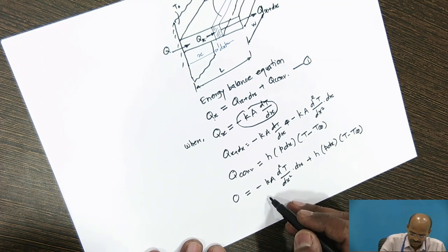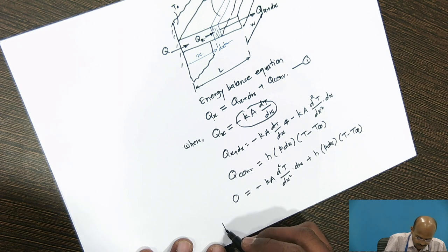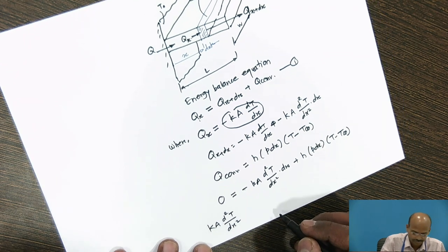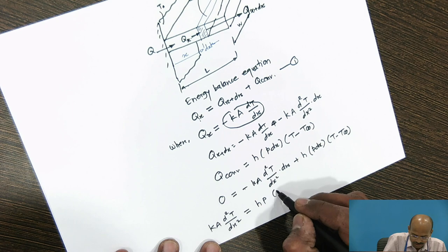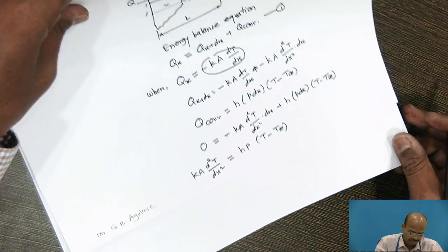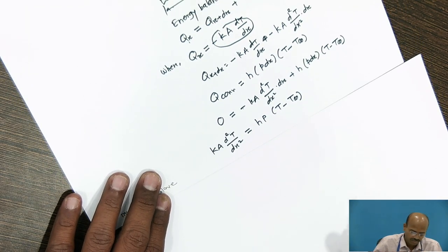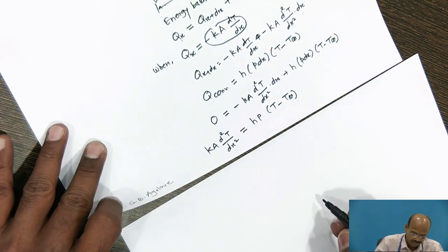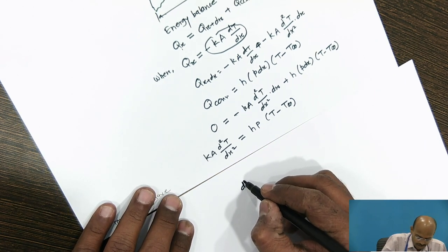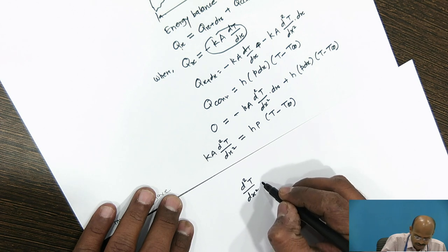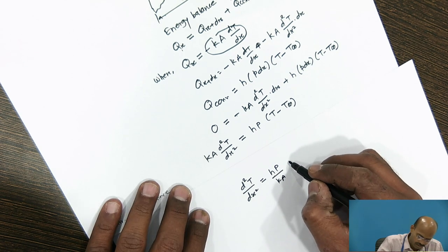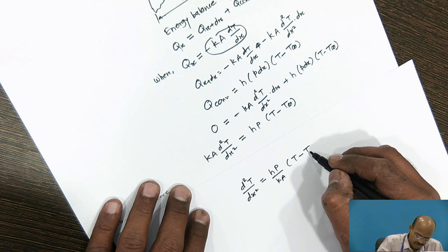If I bring it on the left hand side, I can write the equation: K d²T/dx² is equal to hP(T - T∞).